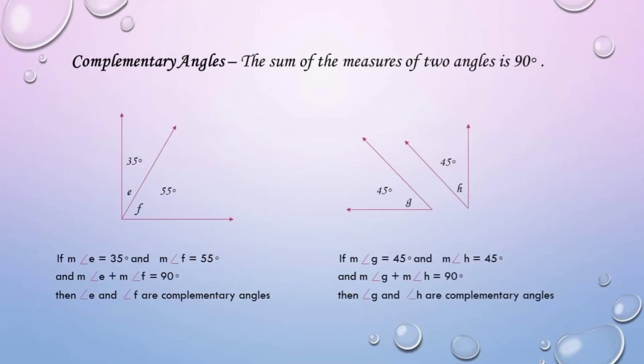Complementary angles — the sum of the measures of two angles is 90 degrees. If the measure of angle E is 35 degrees and the measure of angle F is 55 degrees, and the measure of angle E plus the measure of angle F is equal to 90 degrees, then angle E and angle F are complementary angles.